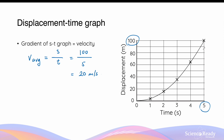To find instantaneous velocity at a specific point on a displacement-time graph, we draw a tangential line at that point and calculate its gradient. For example, at three seconds we draw a tangent and compute the gradient, which gives the instantaneous velocity at that moment. Similarly, at five seconds we draw another tangent — its gradient is steeper, confirming that the instantaneous velocity at five seconds is greater than at three seconds, consistent with uniform acceleration.